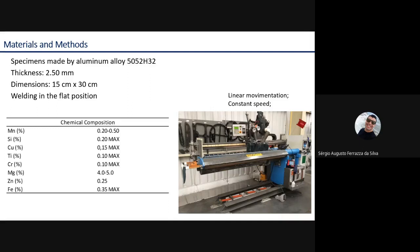Materials and methods: The specimens were welded, made by aluminum alloy 5052H32. It was welded in the flat position. The specimens have thickness of 2.5 millimeters and dimensions of 15 by 30 centimeters.